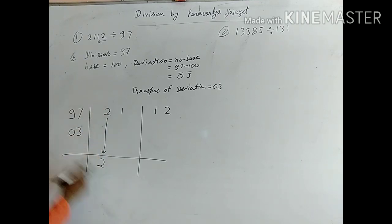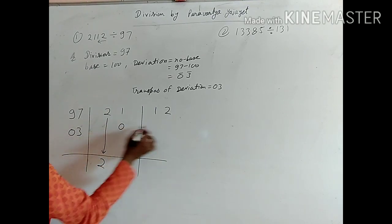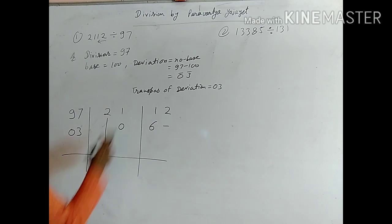So we get 2. First column, it will multiply. So 2 into 03 we get 06. Same, we get 1.